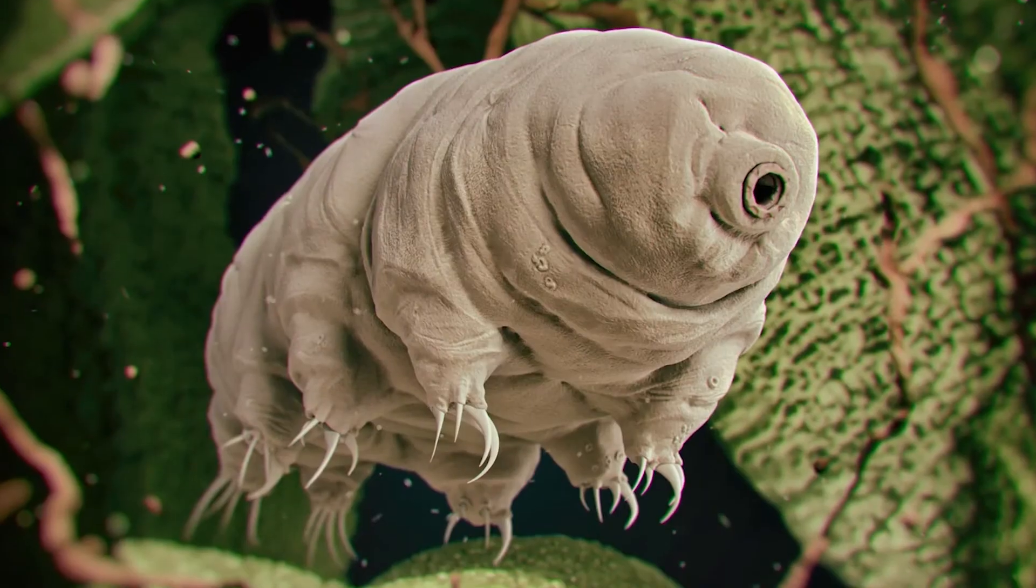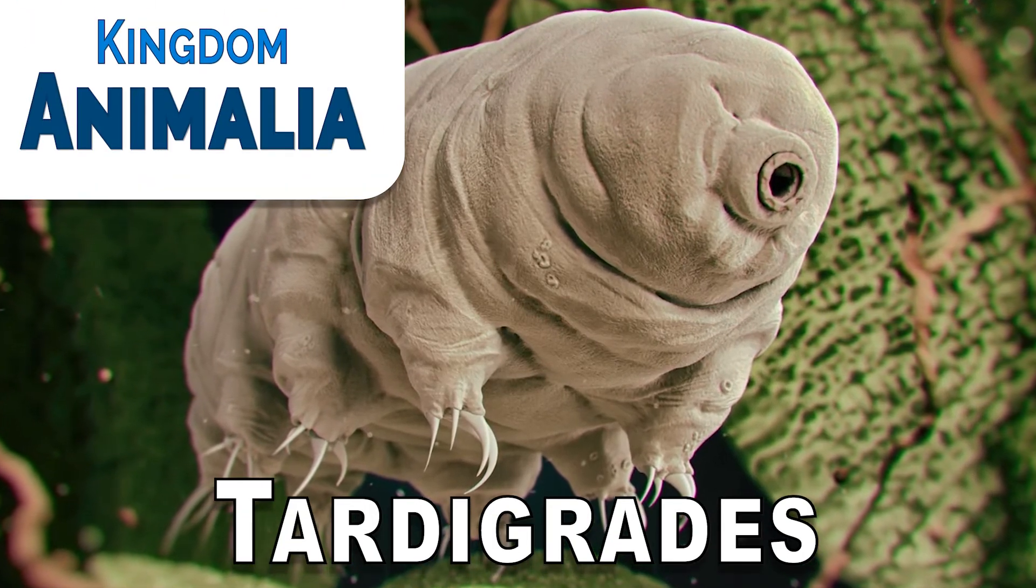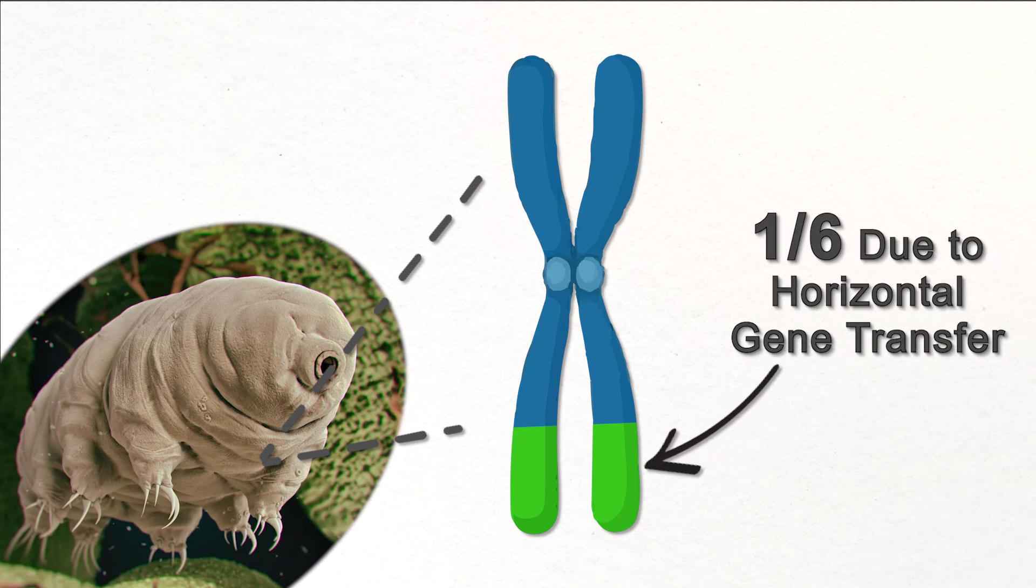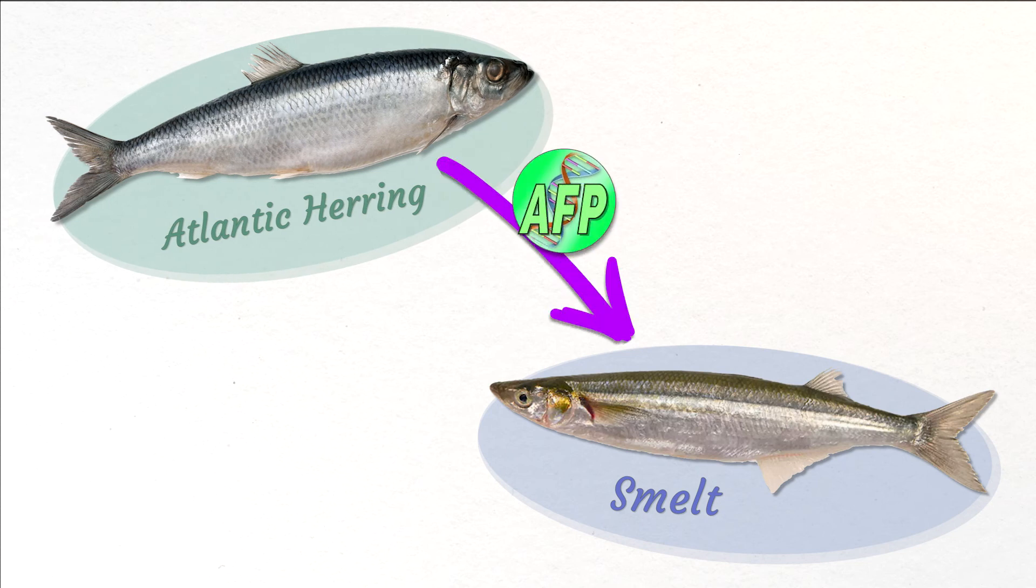The lovable bear-like extremophiles known as tardigrades of Kingdom Anomalia owe approximately one-sixth of their genes to horizontal gene transfer. There's even an example of what looks like a transfer from animal to animal.